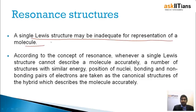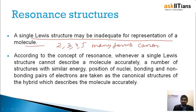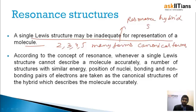A single Lewis dot structure cannot depict the whole molecule — it can be represented in two, three, four, five, or many forms. All those forms are called canonical forms. Combining all these canonical forms, we get one resonance hybrid structure, and this resonance hybrid structure is the most stable structure.